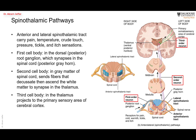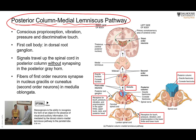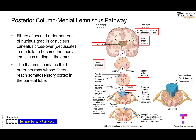The first pathway is called the spinothalamic pathway because the second order neurons travel from the spinal cord to the thalamus, and the third order neurons project to the primary somatosensory area. The second is called the posterior column–medial lemniscus pathway because the first order fibers travel in the posterior column and cross in the medulla to form the medial lemniscus. In both pathways, the first order neuron cell body is always located in the dorsal root ganglia.